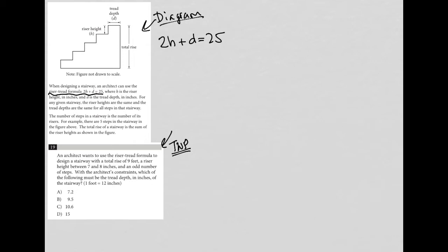Question 19 says an architect wants to use the rise or tread formula to design a stairway with a total rise of 9 feet. So I'm going to write this down: total rise equals 9 feet. A riser height between 7 and 8 inches, so H is between 7 and 8 inches.